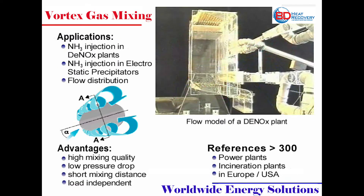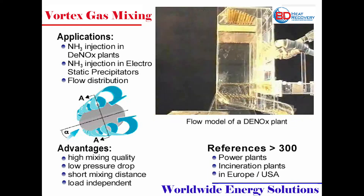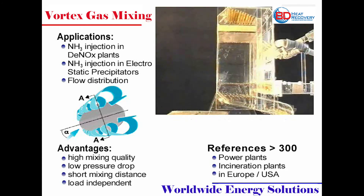This model represents a DeNOx plant. On the right side is a rising ductwork including the NH3 injection with a static gas mixer and turning vanes. On the left side, guide vanes, grids and catalysts are modeled in a scale of 1 to 30.